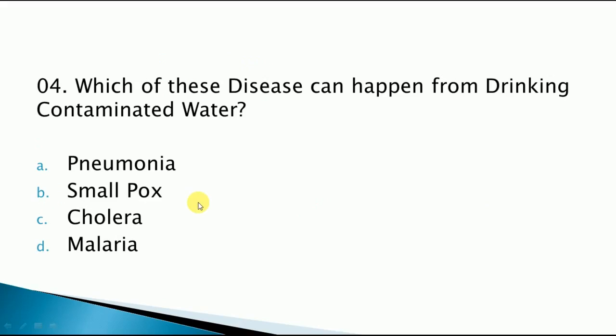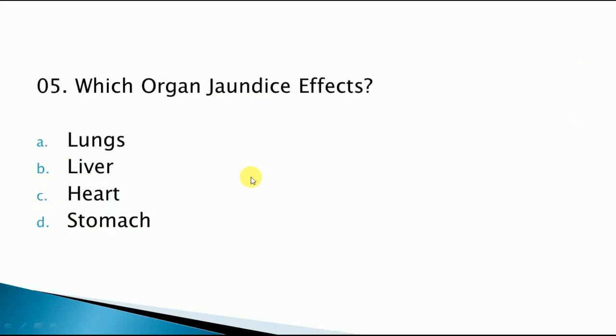Which disease can happen from drinking contaminated water? The answer is Cholera. Which organ does joint disease affect? The correct answer is liver, option number B.